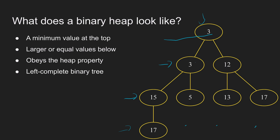The minimum value being at the top is an implication of the heap property. Applying the heap property transitively down through the child and the child's child and so on means that descendants of a node must always be greater than or equal to that node. Another way to think about this is that a subtree of a binary heap will always have the root of that subtree being the minimum value.